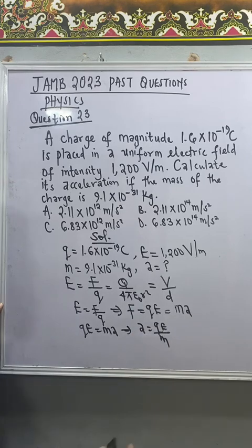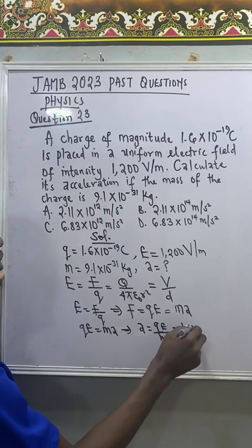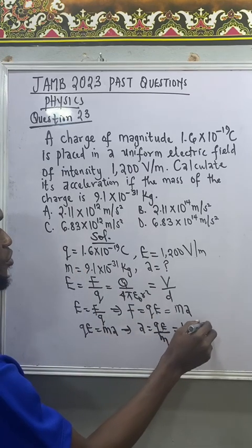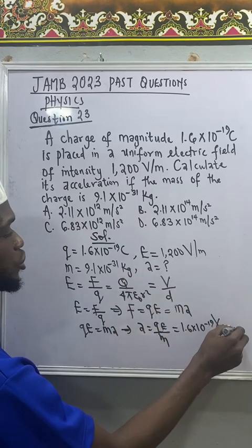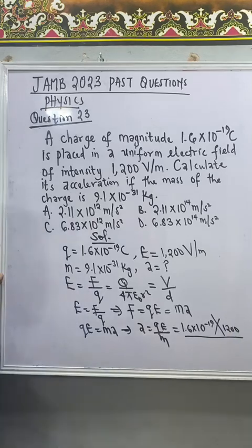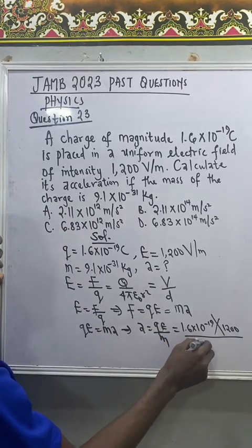The remaining thing is to substitute. Let's substitute what we have: q is 1.6 times 10 to the power of negative 19 multiplied by E is 1200 volt per meter, everything divided by mass which is 9.1 times 10 to the power of negative 31.